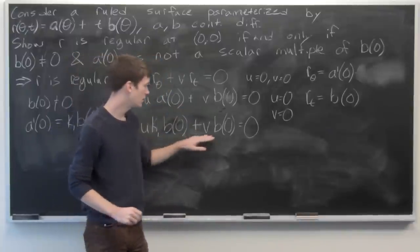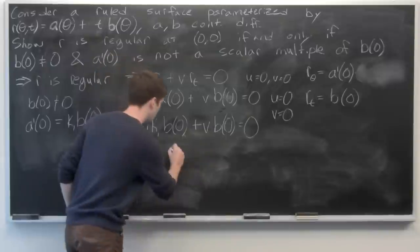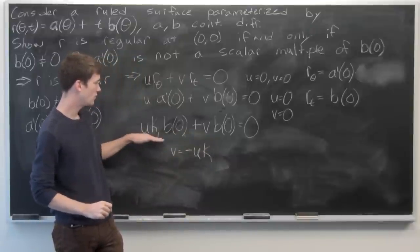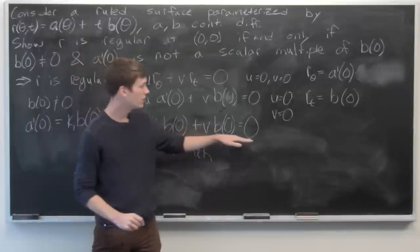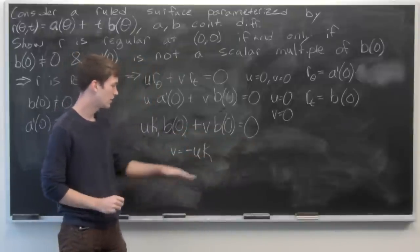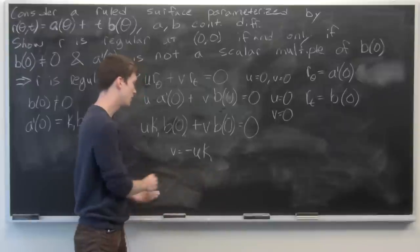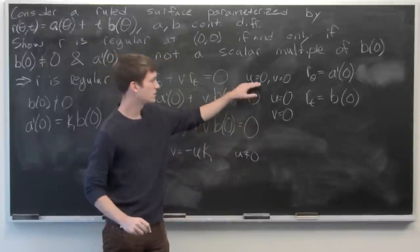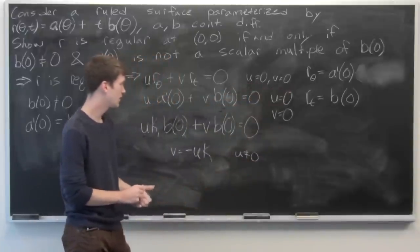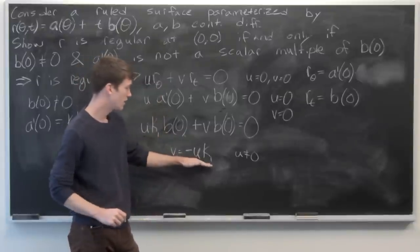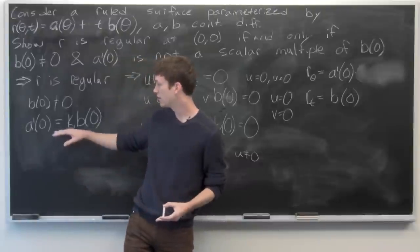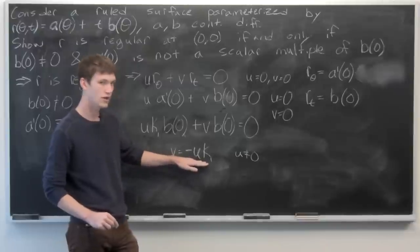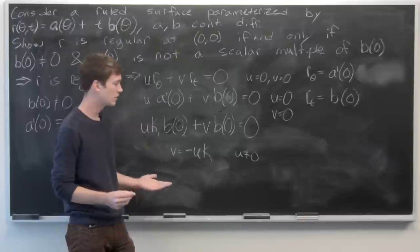So our equation becomes u·k₁·b(0) + v·b(0) = 0. If we let v = -u·k₁ and plug that in, we get u·k₁·b(0) - u·k₁·b(0) = 0, which is true for all u. Since k₁ is a constant, this holds for some u ≠ 0, giving a nontrivial solution — a contradiction, since we required u = v = 0 as the only solution.